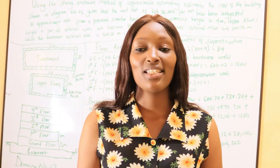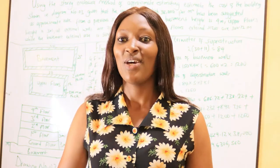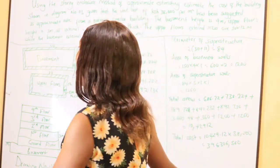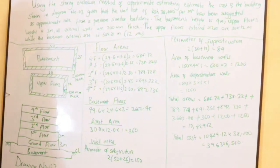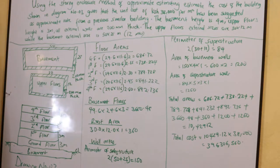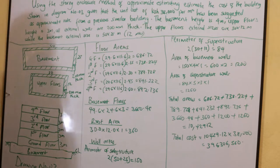You are asked to do a cost estimate using the story enclosure method. The question states: using the story enclosure method of approximate estimation, estimate the cost of the building shown in diagram three, given that the unit cost is 38,000 per meter squared from a previous similar building. The basement height is 4 meters, upper floor height is 3 meters, all external walls are 200 millimeters thick, the upper floor external sizes are 30 by 12 meters, and the basement external size is 50 by 25 meters.